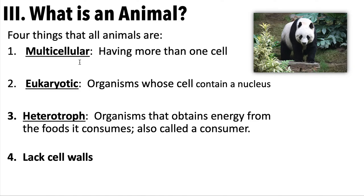Second, it's got to be eukaryotic, meaning it contains a nucleus — as opposed to prokaryotic, which lacks a nucleus. Animal cells have a nucleus. Third, it must be a heterotroph, meaning it obtains energy from the food it consumes — it's a consumer. Some other organisms produce their own energy, but animals do not. Fourth, animals lack cell walls. Plant cells have cell walls; animal cells do not.